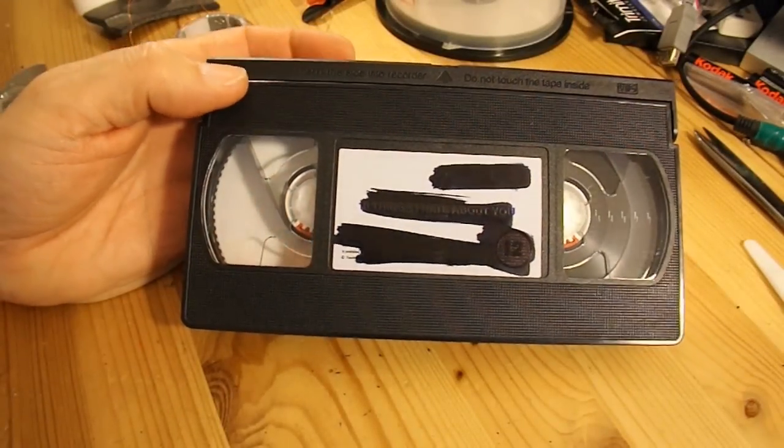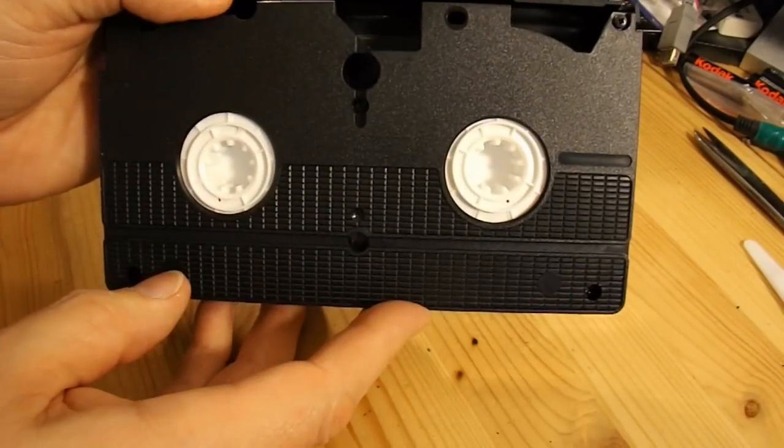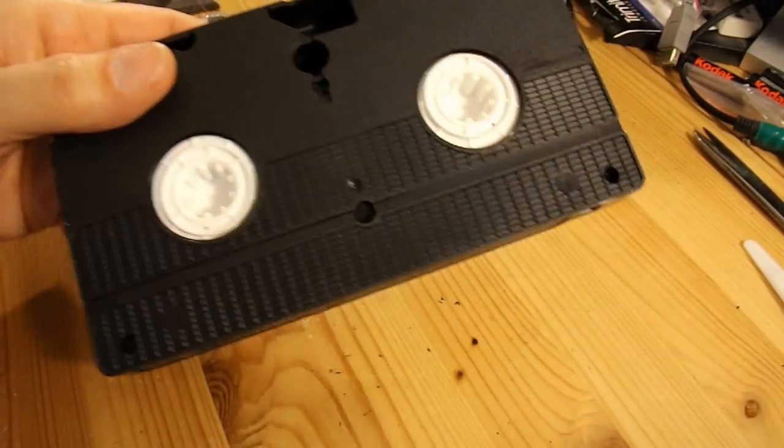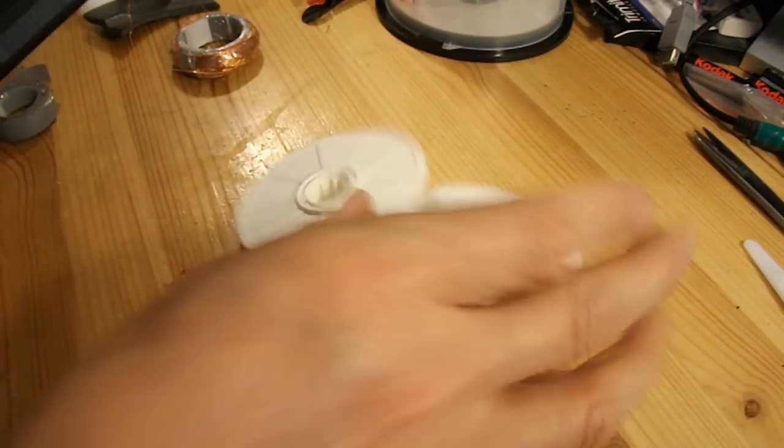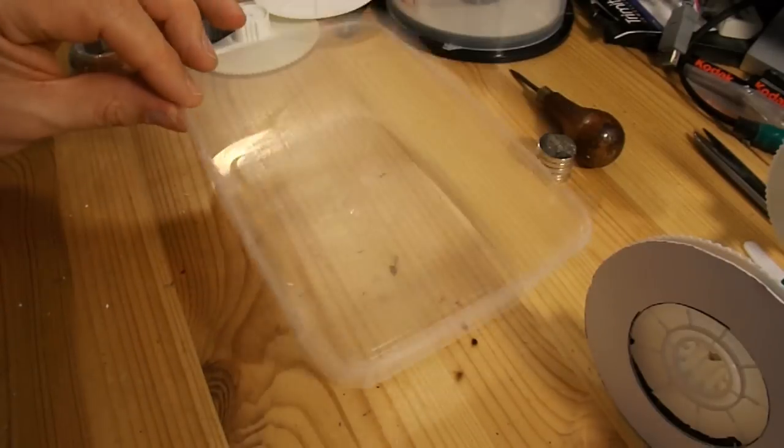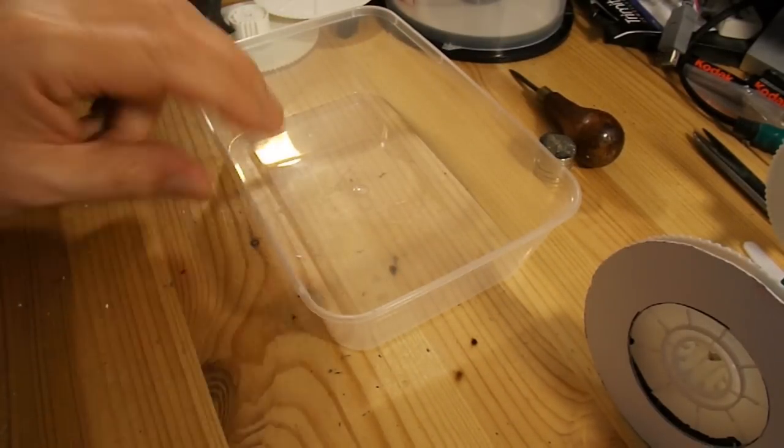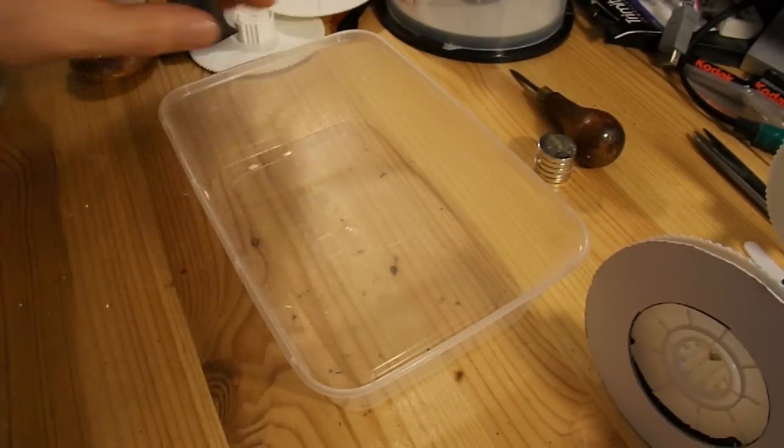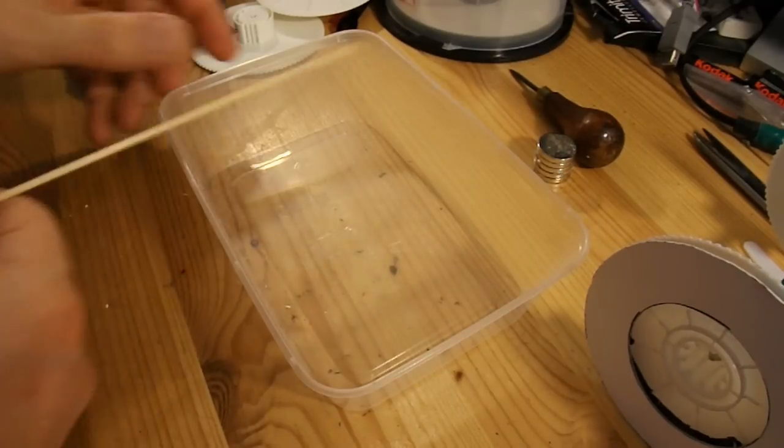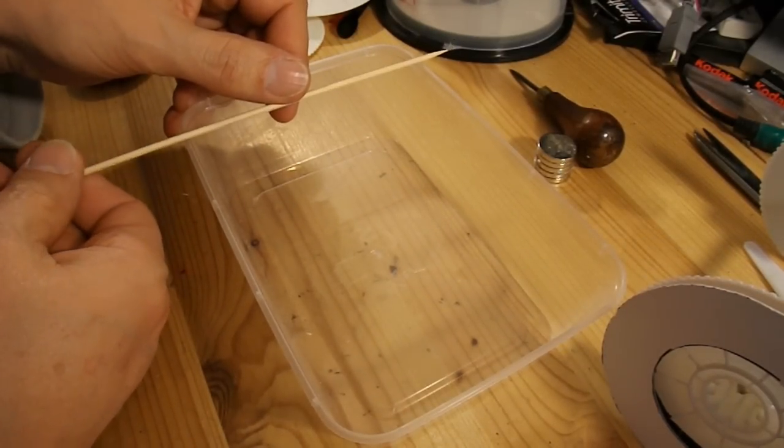For the wheels for the car, I'm going to take the spools out of this old VHS cassette tape. There's a couple I've taken out of another one already. I think I'll use one of my storage boxes as the chassis for the car.